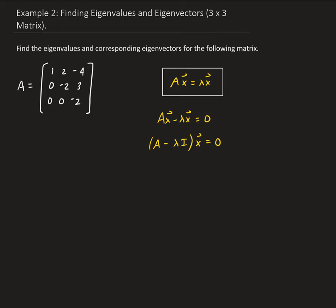Remember, we're interested in a non-trivial solution. We know X equals zero is a solution, but we don't want that — we want something non-trivial. So that means the determinant of (A minus lambda I) must be equal to zero. That's how we're going to find our eigenvalues for this problem.